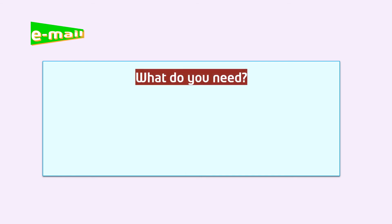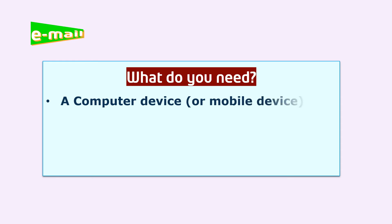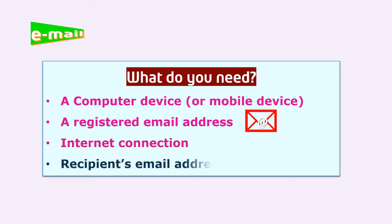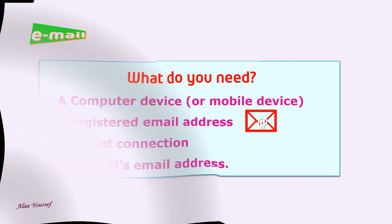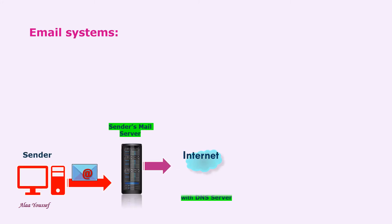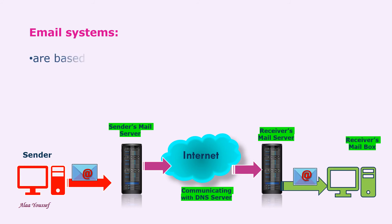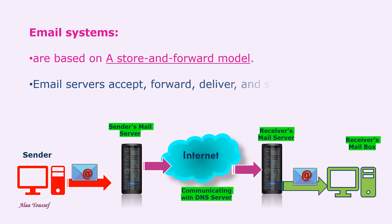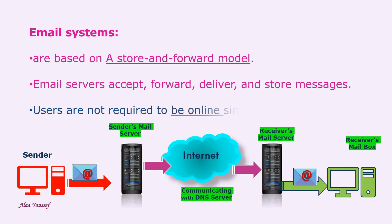What do you need? A computer device or mobile device, a registered email address, an internet connection, and the recipient's email address. Email systems are based on a store-and-forward model. Email servers accept, forward, deliver and store messages. Neither the user nor their computers are required to be online simultaneously — they need only connect briefly to a mail server for as long as it takes to send or receive messages.